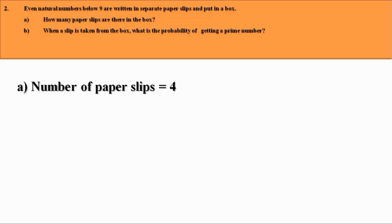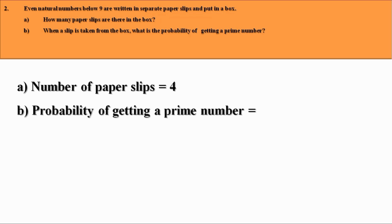Now, we have to find the probability of getting a prime number when a slip is taken from the box. There is one and only one even prime number, and that is 2. So, a prime number will be obtained only when he takes 2. Therefore, the probability of getting a prime number is 1 by 4.